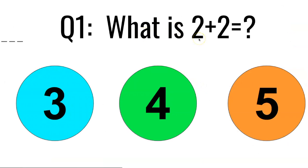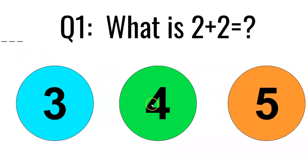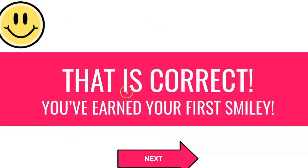What is two plus two? So first question — big buttons here so they're easy to identify. They don't have to worry about a quiz structure or anything, they're just very visual. So we have three, four, or five. Let's say I pick three, which is the wrong answer. It says sorry, you didn't get that quite right, but click the back button to try again. So I click the back button here, and let's say I do get it right this time. It says that's correct, you've earned your first smiley — you can keep track up in the corner.